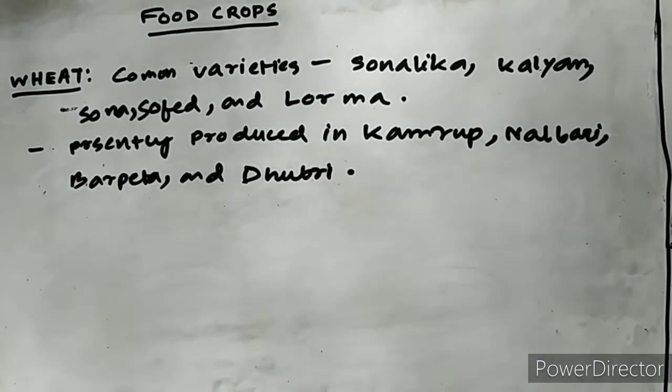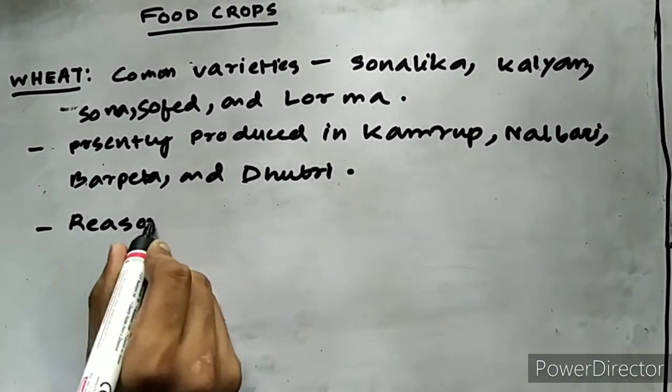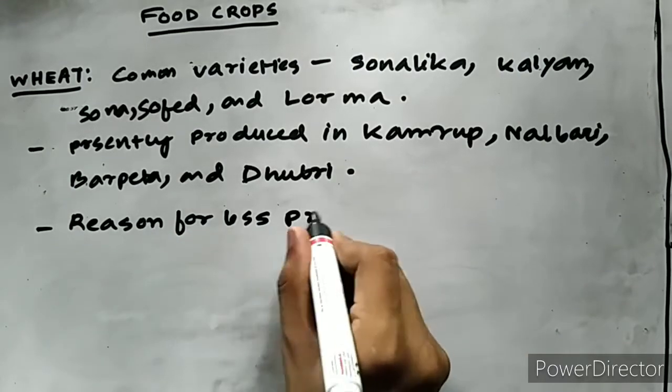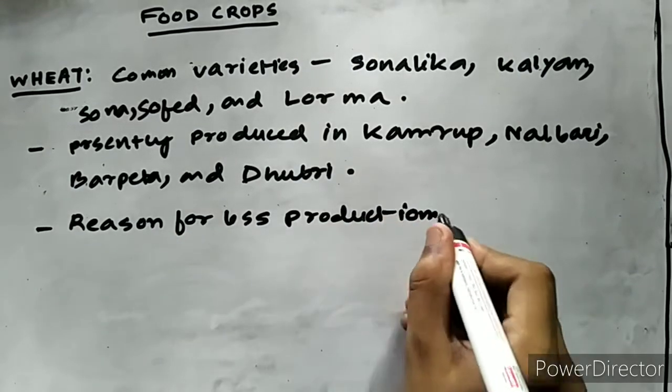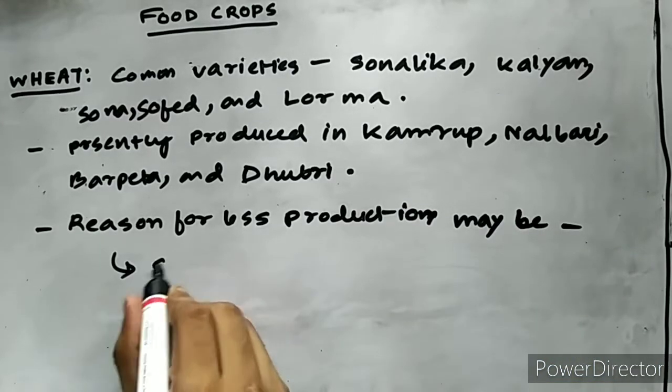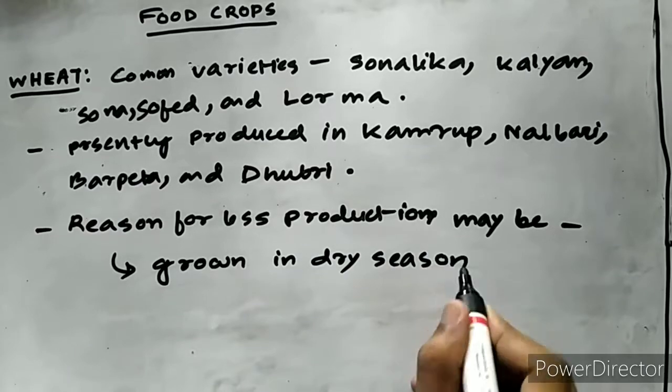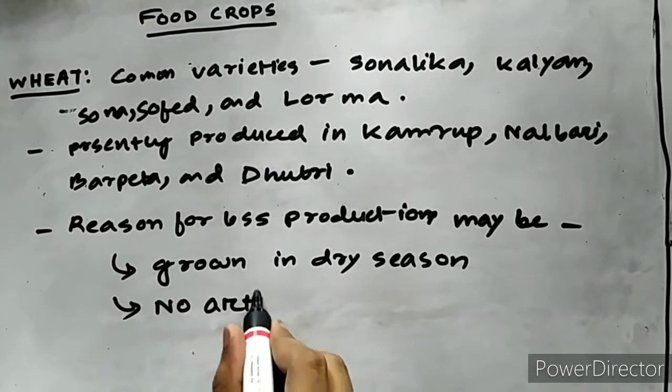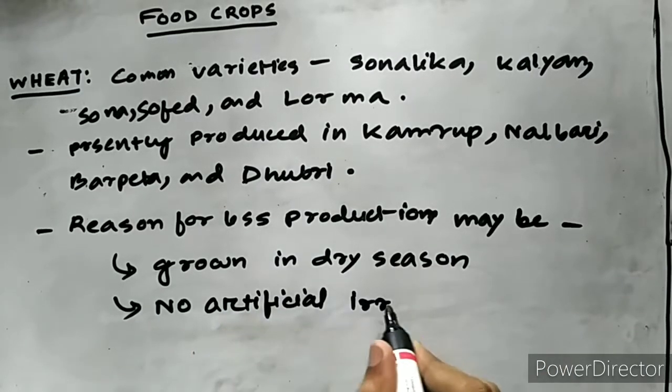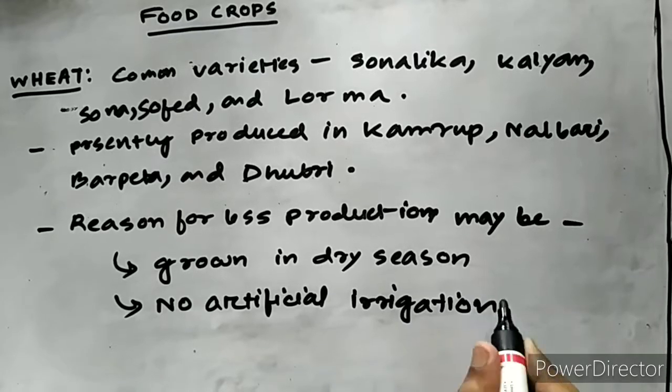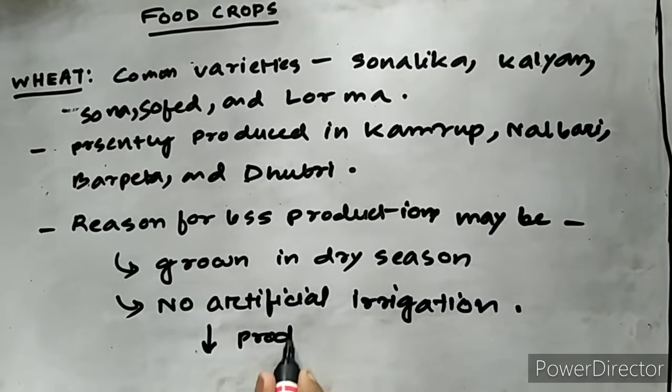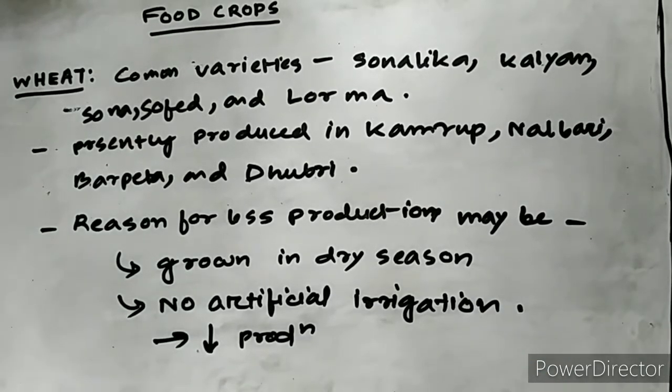Presently it is produced in Kamrup, Nalbari, Barpeta, and Dhubri districts of Assam. Total production increased from 3,000 tons in 1960-61 to 86,000 in 2000-2001. The reason wheat cultivation has not picked up in Assam is that it has to be cultivated in dry season. Since there is no artificial irrigation, the production of wheat is also low in the state.